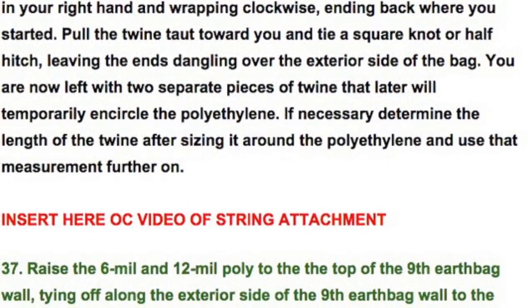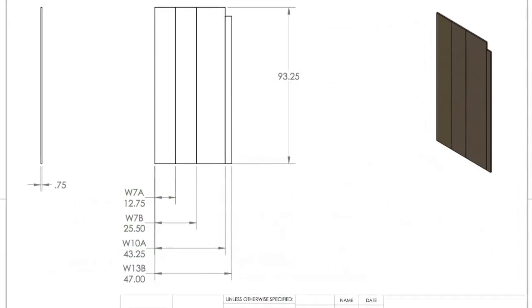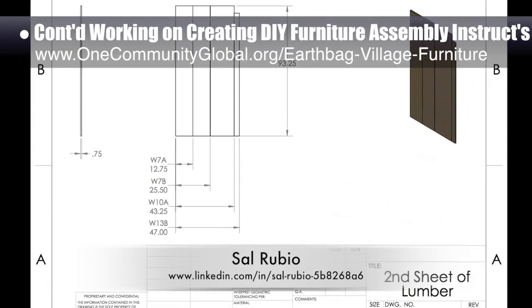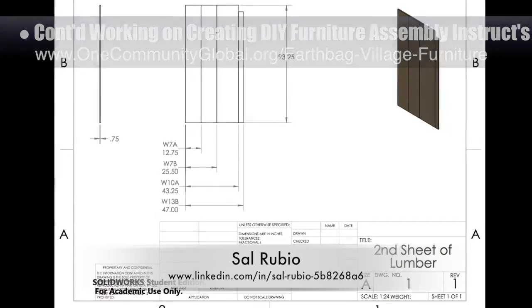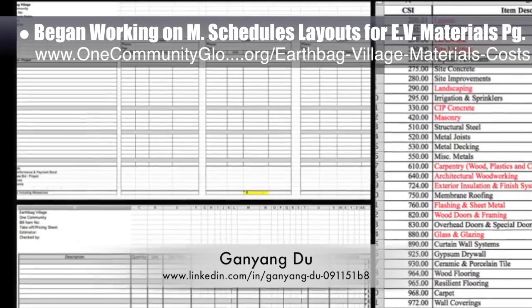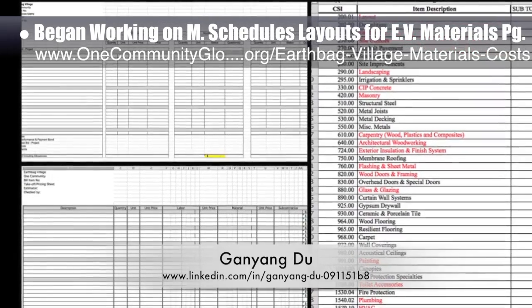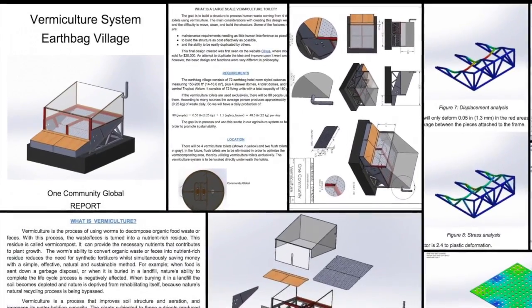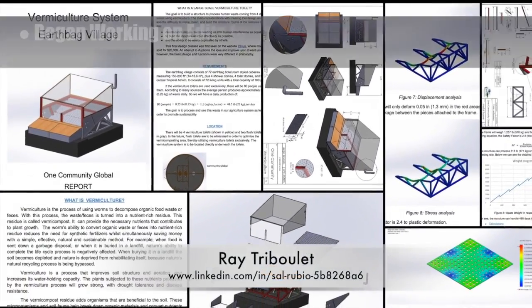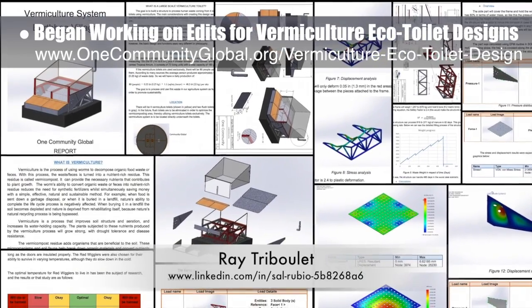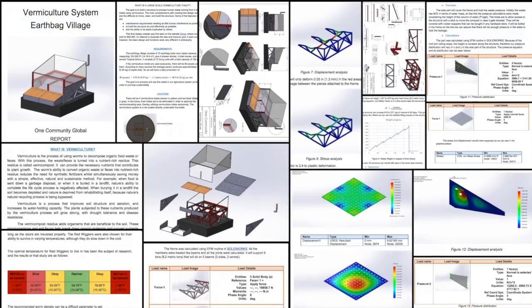We are now 86% complete with this total update and rewrite behind the scenes. Sal Rubio, industrial designer, continued working on creating professional do-it-yourself EarthBag Village Murphy Bed Furniture Assembly instructions — this is week 5, featuring our first version of instructions for cutting the proper pieces. Gao Yong Du, construction project manager, began working on materials schedule layouts for the EarthBag Village materials page to bring formatting and organization up to industry standards. Ray Tribolet, web developer and active duty U.S. sailor, began working on final revisions for the communal vermiculture eco-toilet designs that are part of EarthBag Village Pod 1.